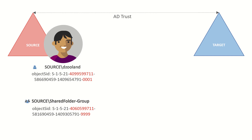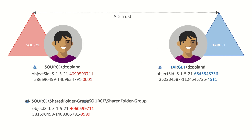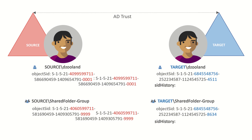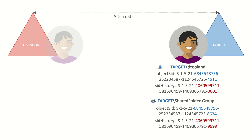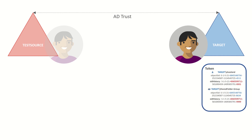ADMS solves this problem by using SID history. In addition to creating the new user and group objects in the target domain, we bring across the SID of the source object and populate them into the SID history attribute of the corresponding target object. After migration, Derek's source account would typically — as a recommended practice — become disabled. Derek logs on using his migrated target domain account. When he creates his access token, it will be populated with all of the target domain SIDs for his user and group objects, and it will also get populated with all of the values in the SID history attributes — so he gets all the source domain SIDs added to his token as well.